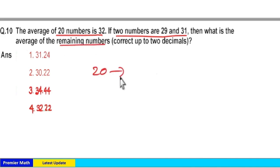Here 20 numbers average is 32. And 2 numbers are 29 and 31 means if I add 1 here, this will become 30 and 30. So 2 numbers average is 30.